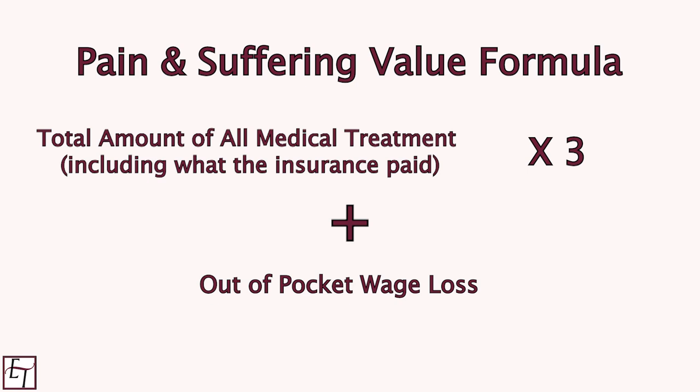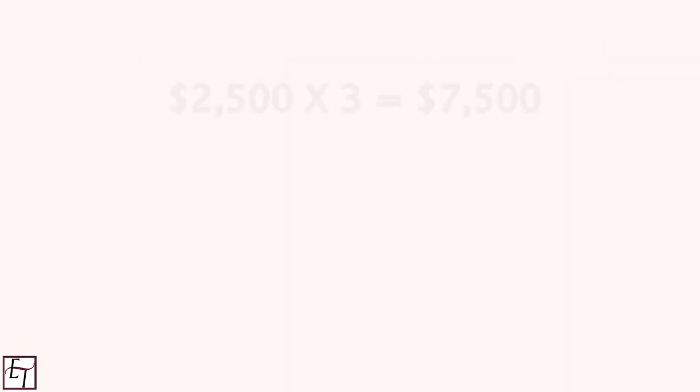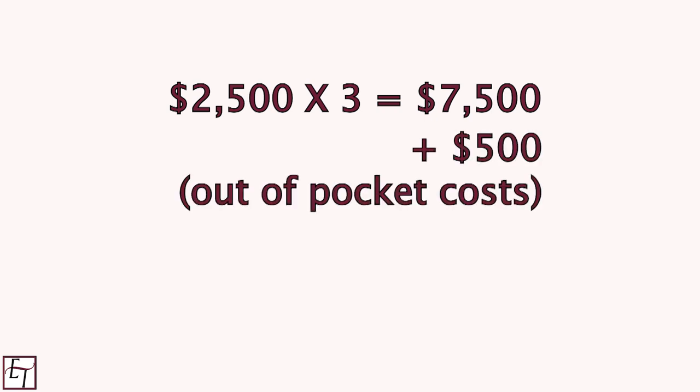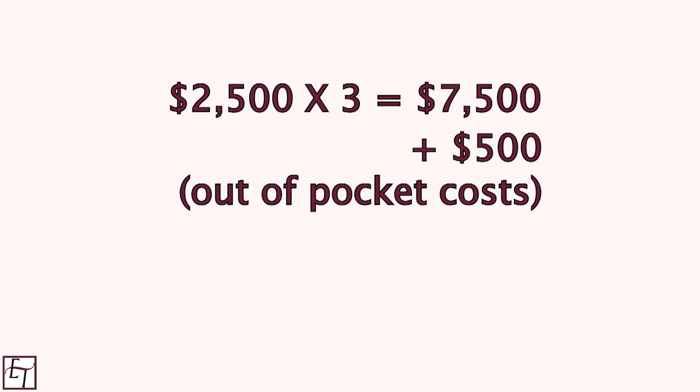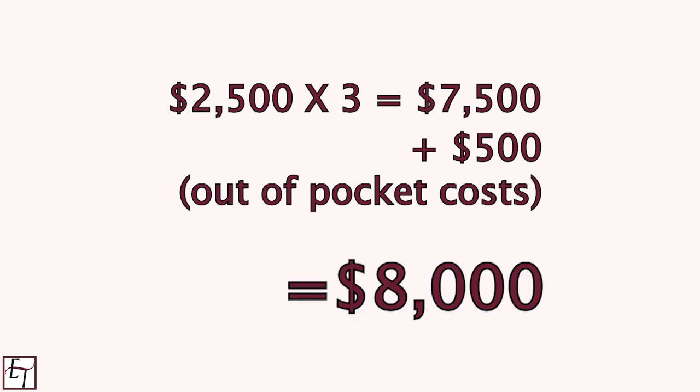How much time did you miss from work and what was the value of your services? For example, if your medical bills were $2,500, you multiply by three for $7,500. If you had $500 in missed work, then it's $7,500 plus $500 for an $8,000 settlement value.